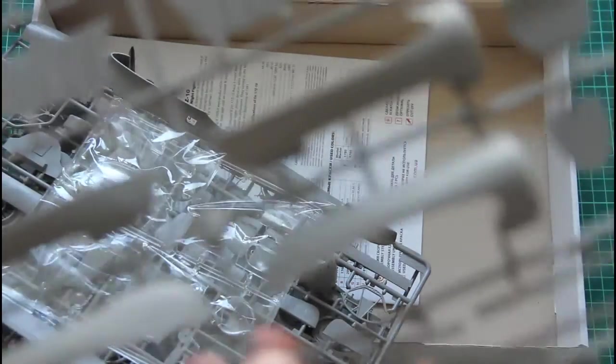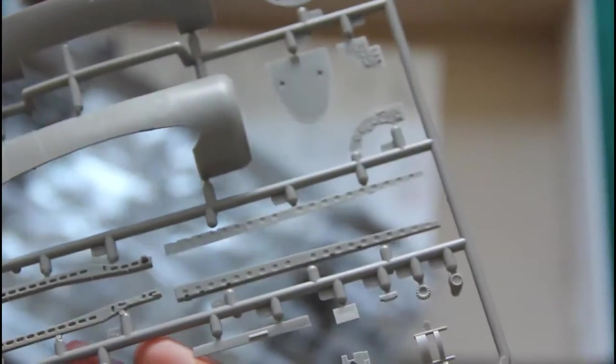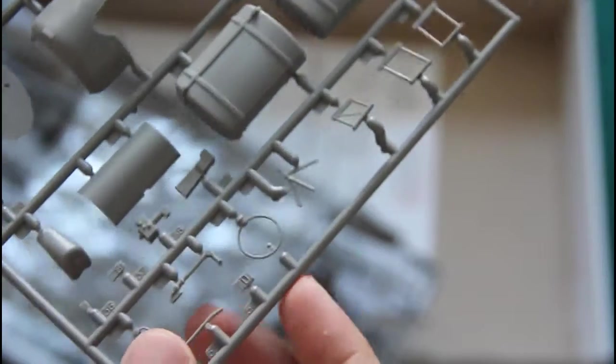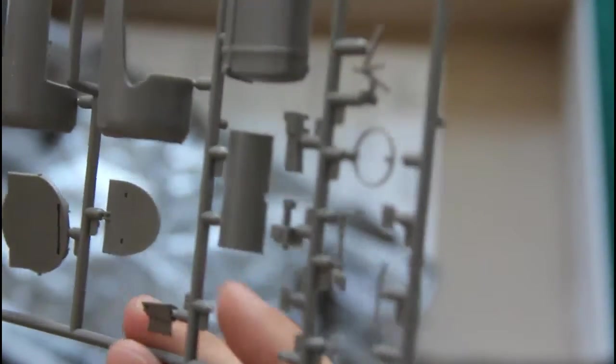First we will check this big sprue with engine gondolas, and then we will jump to the other frames which are included in this kit. Here you can see this nice plastic sprue. Molding quality is quite nice. I think some of the internal components will be replicated.